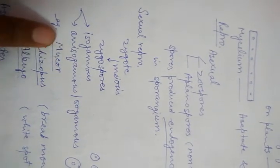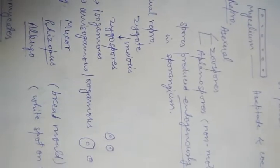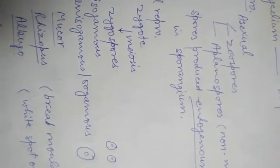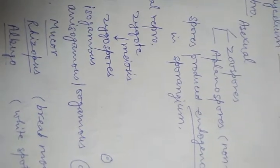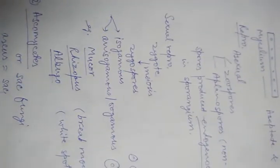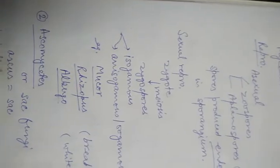If the gametes are different in appearance they are called anisogamous or oogamous. This classification of isogamous or oogamous is based on the morphology of the gametes — their external appearance, shape, and size. So zoospores, aplanospores, and zygospores are the three kinds of spores produced in Phycomycetes.